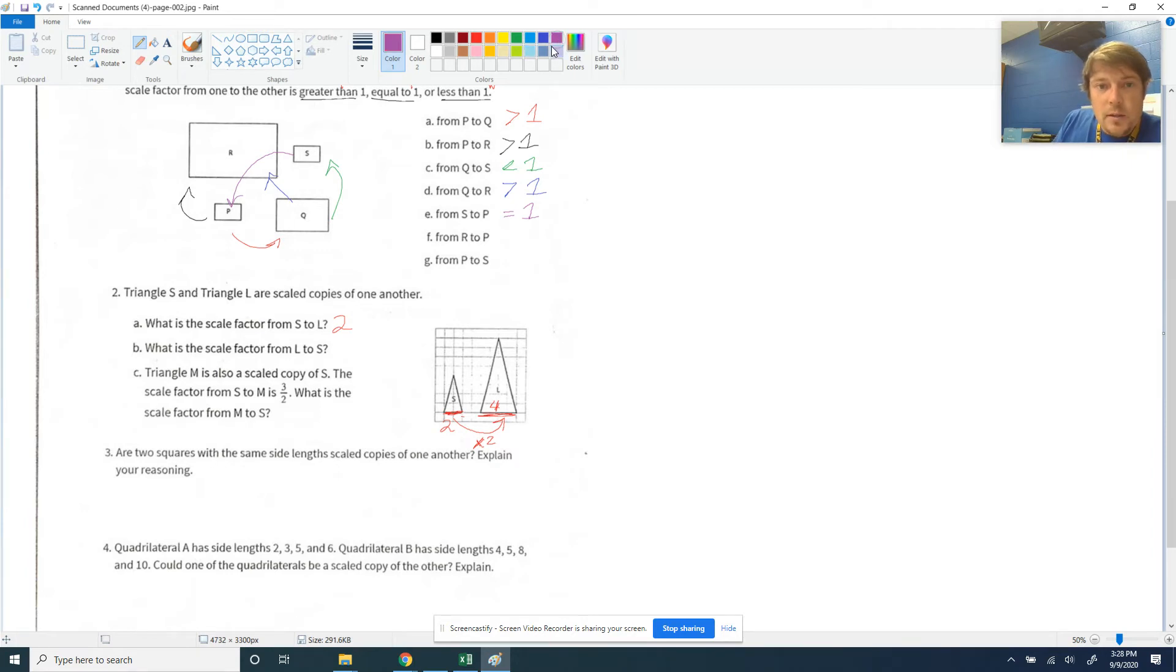We learned that to reverse scale factor and go back from L to S, which is what they're asking about on part B, that we take 2's reciprocal. So we have to think, what is 2's reciprocal? That would be just flipping that fraction upside down on itself, and to get back, we would multiply by one half, because 2 is half of 4. So reciprocal relationship between those two.